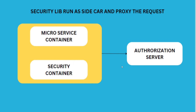The third way is in terms of Kubernetes. Here the security library we have prepared runs as a sidecar along with the microservice inside the same pod. The yellow represents the pod, this is the microservice container, and alongside it a security container is running. Any request trying to access a URL from the microservice will go through this security container.